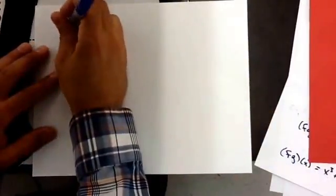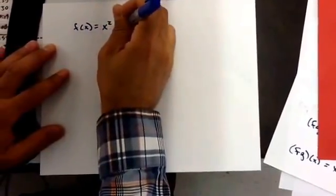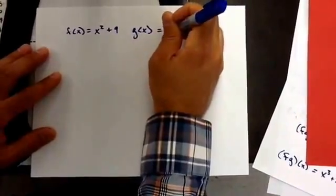What we're going to look at is the harder part of composite functions. I give you f(x) equals x squared plus 9, g(x) equals 3x plus 1.